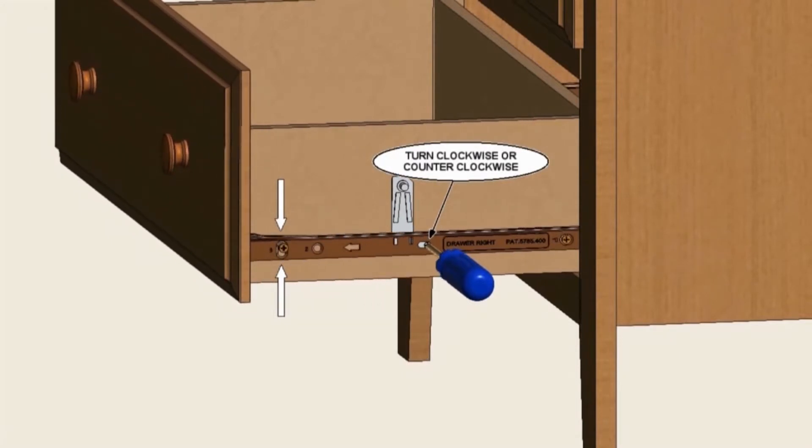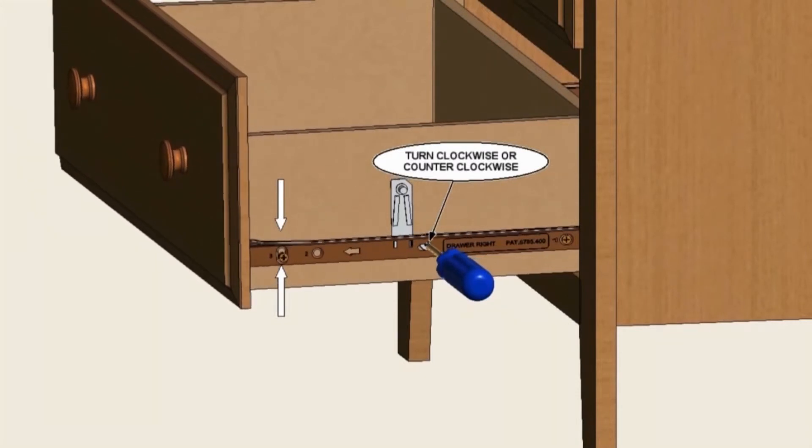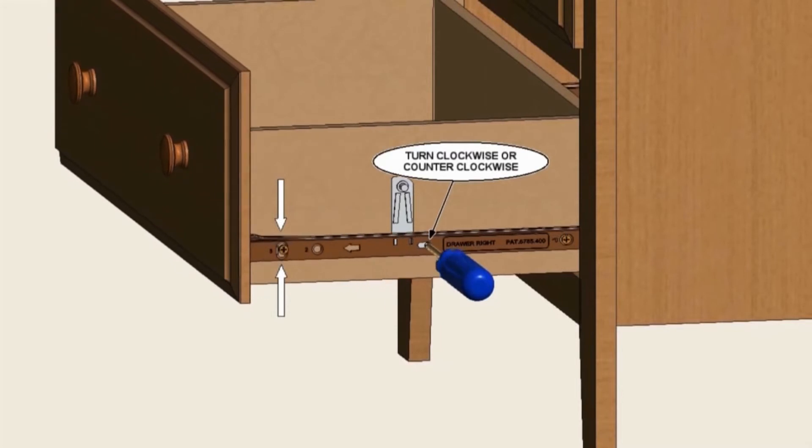The higher the screw is in the oblong hole, the higher your drawer front will be. The lower the screw is in the oblong hole, the lower your drawer front will be.